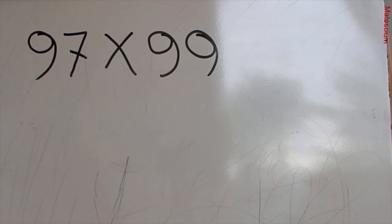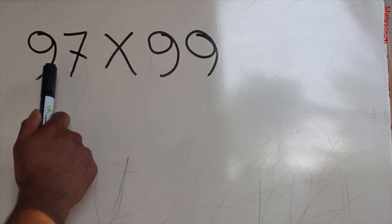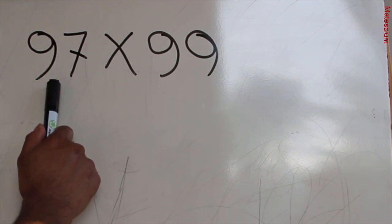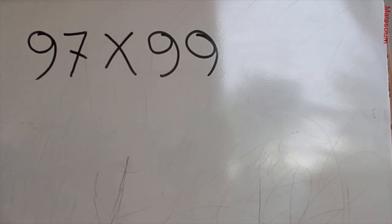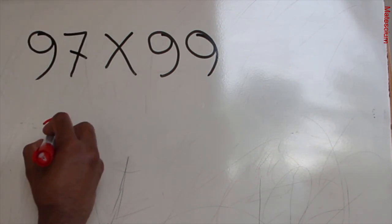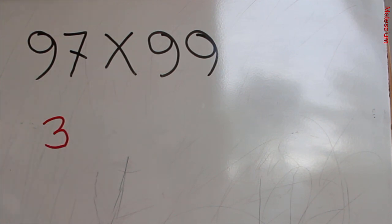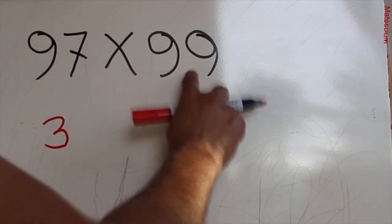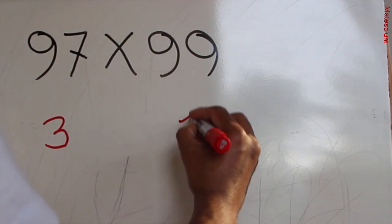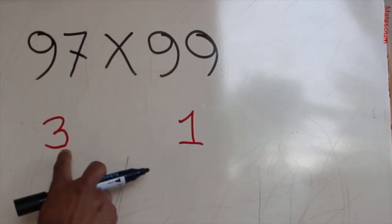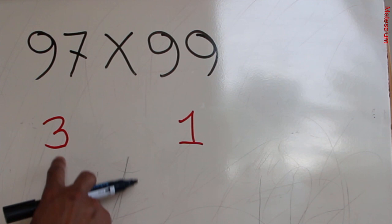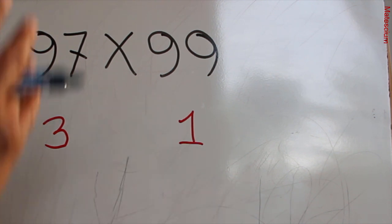The trick is: you have to imagine the nearest bigger number. Here, the nearest bigger number of 97 is 100 — that means 97 needs 3 to make 100. And 99 needs 1 to make 100. The next step is to add those two: 3 plus 1 equals 4.